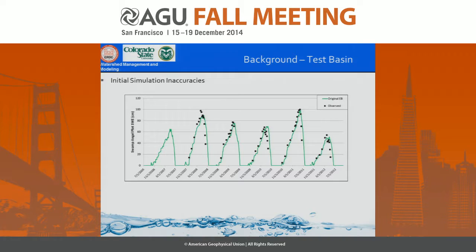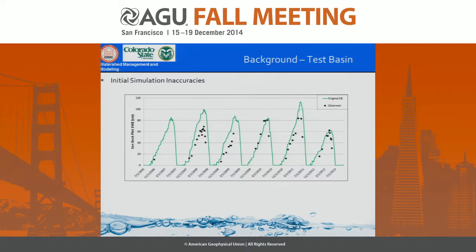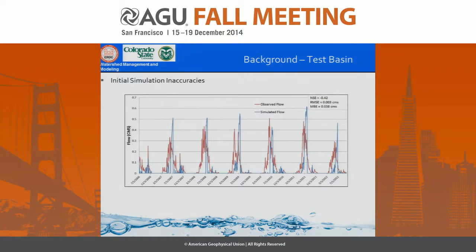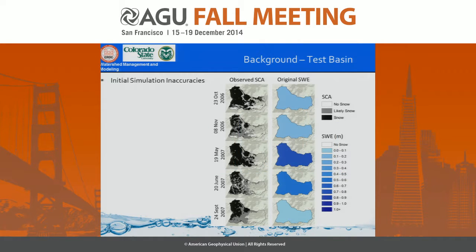When we ran the initial model, we looked at the Swamp Angel plot site at the lower elevation and it matched fairly well — looking promising. Then we looked at the upper elevation plot site and were missing quite a bit; it still needed improvement. Then we looked at outflow, and outflow was awful — a Nash-Sutcliffe of negative 0.42. We were off on timing and off on peak flows. Looking at the snow cover area, we were simulating the basin as one big blob, not accounting for any spatial variability. The observed snow cover area is on the left, and the original snow water equivalent simulations are on the right.